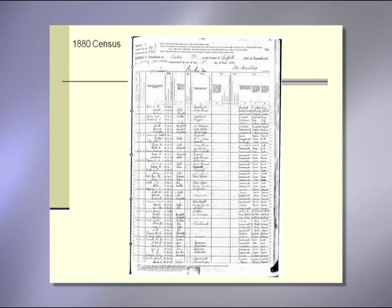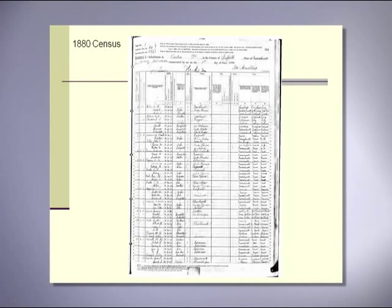The 1880 census for the first and only time asks health questions: was the person blind, deaf and dumb, an idiot, insane, maimed, crippled, or disabled. Some of the diseases listed may not be familiar to you, but you can search an online medical dictionary to frequently get the answer. The language used reflects terminology of the era.